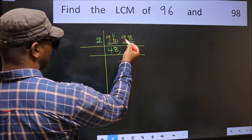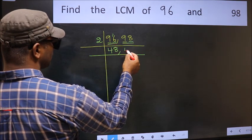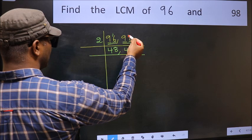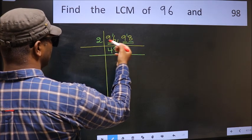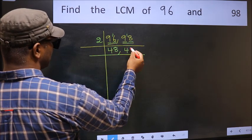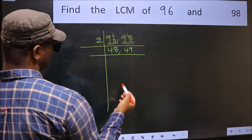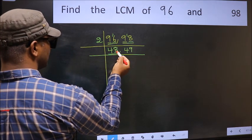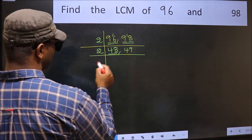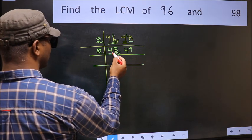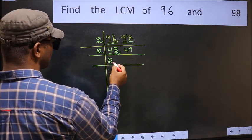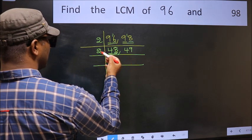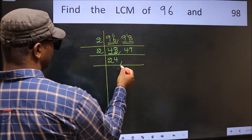First number 9: a number close to 9 in the 2 table is 2 fours are 8. 9 minus 8 is 1, carried forward — 18. When do we get 18 in the 2 table? 2 nines are 18. Now here we have 48. Last digit 8 — even, so take 2. First number 4: when do we get 4 in the 2 table? 2 twos are 4. The other number 8: when do we get 8 in the 2 table? 2 fours are 8.